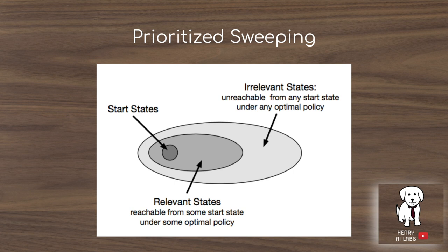Efficient RL algorithms are characterized by how they structure updates. In many problems — like chess — most state configurations never occur. Prioritized sweeping addresses this by only updating states that have had significant changes in their value function. A priority queue stores states with large recent changes, along with their predecessor states, since predecessors are also likely to need updating.